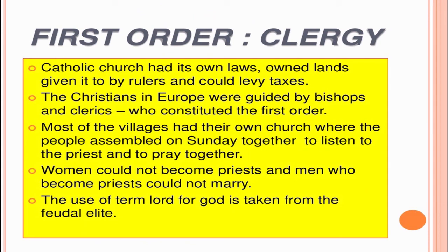Talking about the first order, i.e. clergy: the Catholic Church had its own laws, its own land given by the rulers, and levies also. Christians in Europe were guided by bishops and clerics who constituted the first order. Most villages had their own church where people assembled on Sundays to listen to the priests and pray together. Women could not become priests, and men who became priests could not marry. The use of the term 'Lord' for God is taken from the feudal vocabulary.